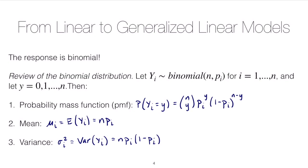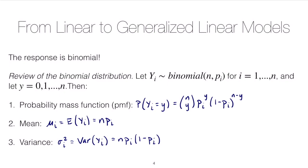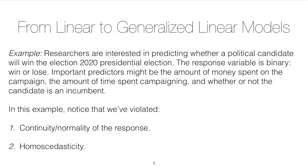So these quantities will be important when we consider how our data violate the linear regression assumptions. And so let's go back to that example and think how these assumptions are violated. So we've already talked about the fact that continuity and normality of the response is a violation. So notice these two things, of course, are actual violations of the regression assumptions.